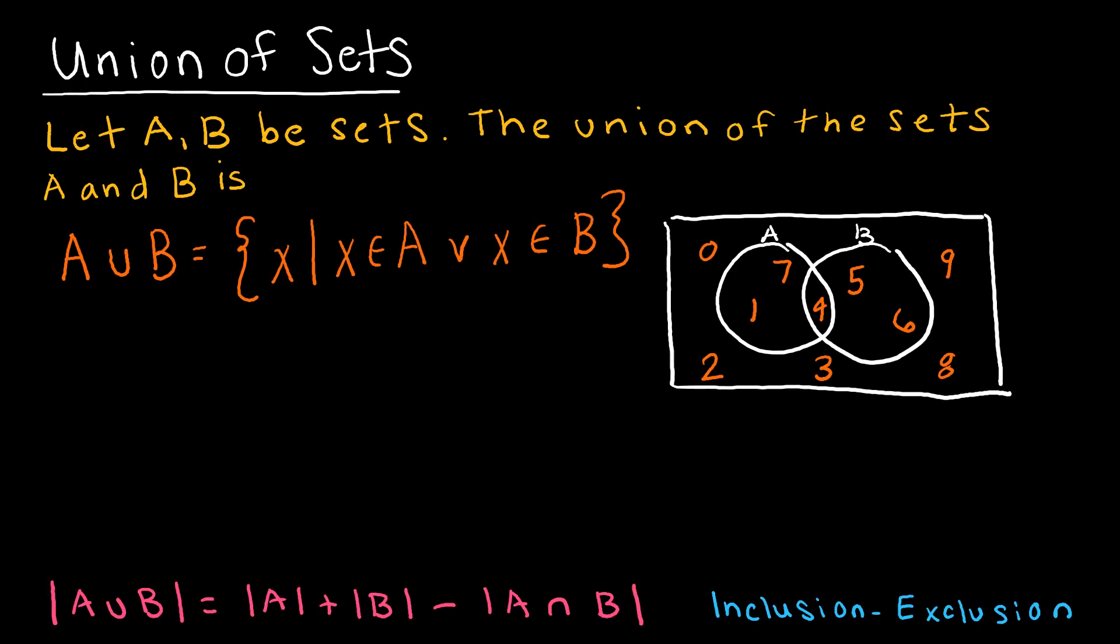So the union of sets is the first one that we'd like to look at, and the definition of the union of sets is essentially all of the values that are in both A and B. So think of union, which this is our notation for union.